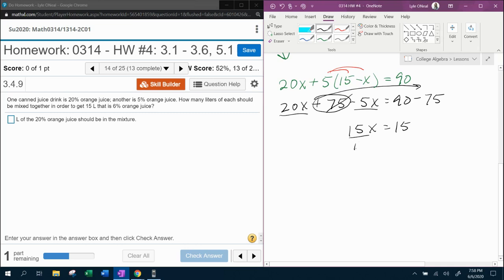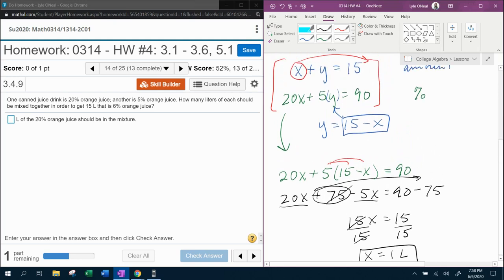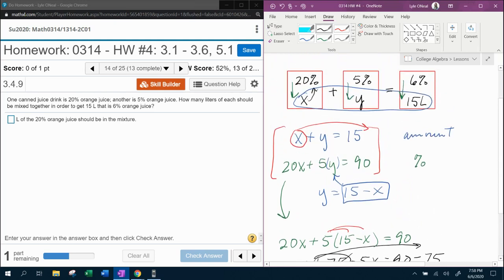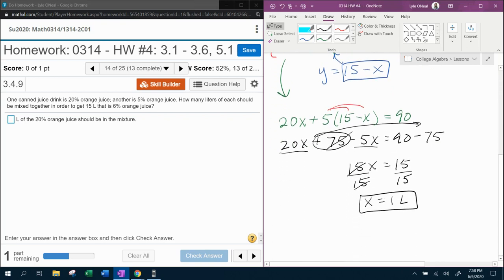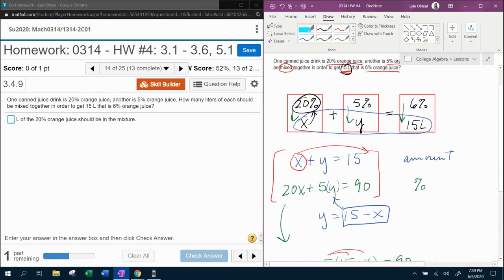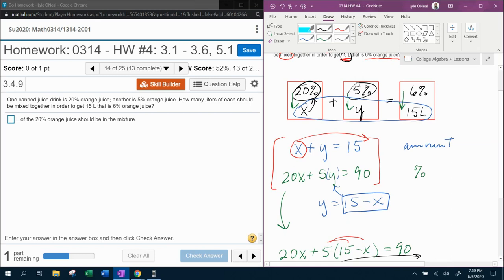X is 1. And remember, that's liters. X is 1 liter. Now, what did X represent? X was the amount of 20% OJ. So we're going to use 1 liter of the 20% OJ. And that means we're going to use 14 liters of the 5% OJ. The Y was the 5.